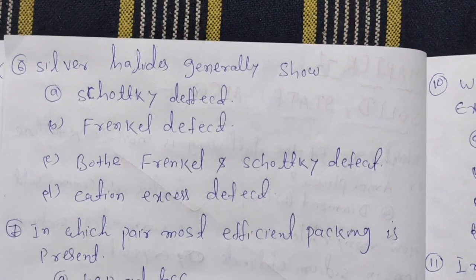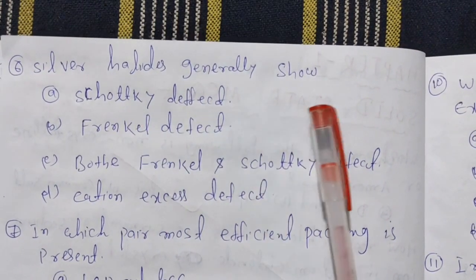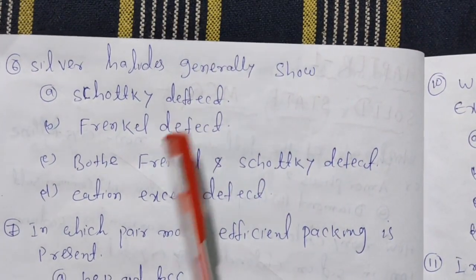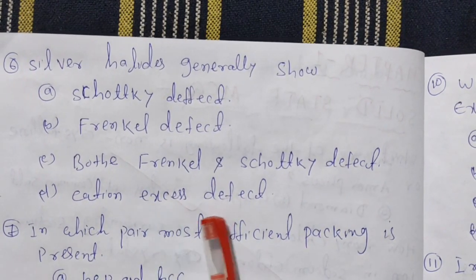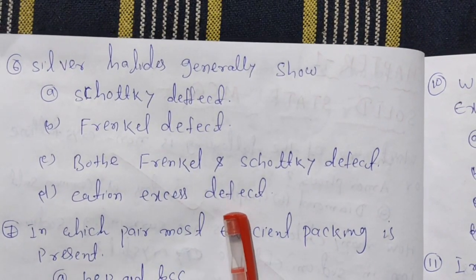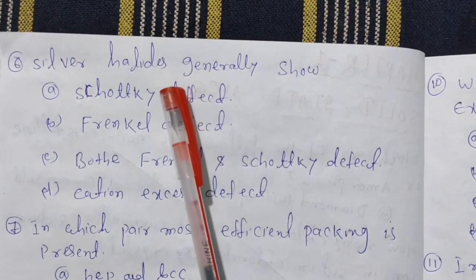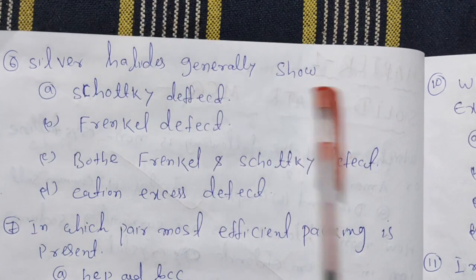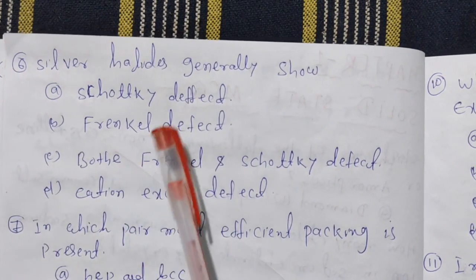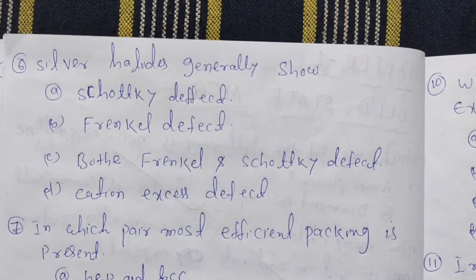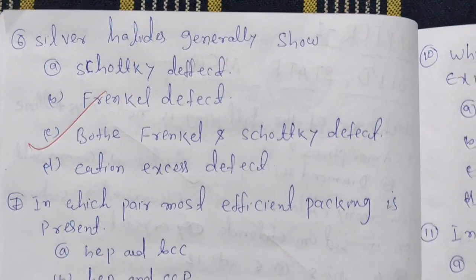Next question, number 6: silver halide generally shows Schottky defect, Frenkel defect, both Frenkel and Schottky defect, or cation excess defect? Silver halide shows both Schottky and Frenkel defects. So the answer is option C.